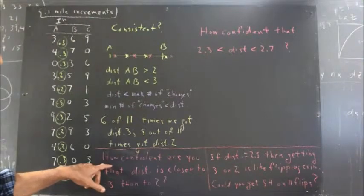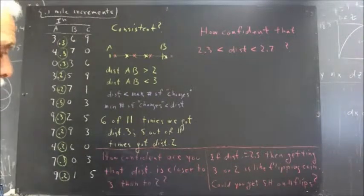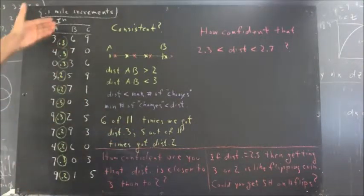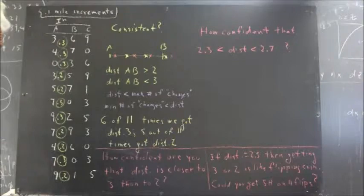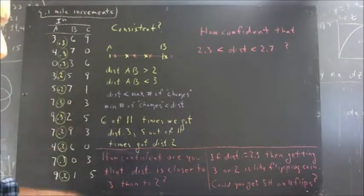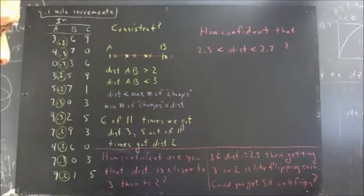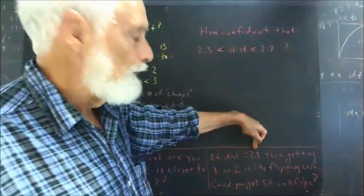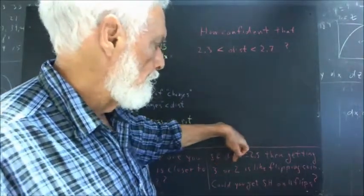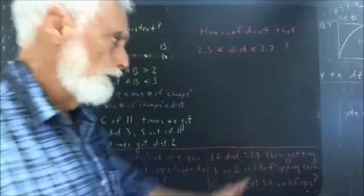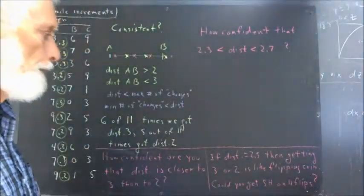So the question is, how confident would you be in saying that the distance is closer to three than it is to two, based on this information on the eleven readings? If you say you're 100% confident, you might want to double-think that. Let's put it this way. If the distance was exactly 2.5, then getting a three or two would be like flipping a coin. Heads, you get three. Tails, you get two, or vice versa.